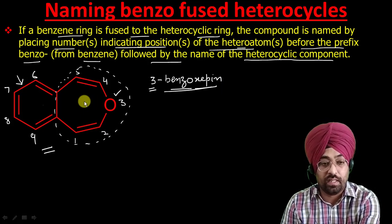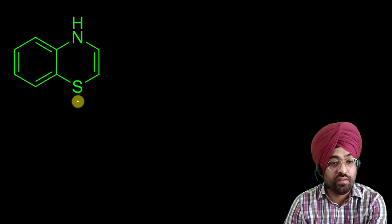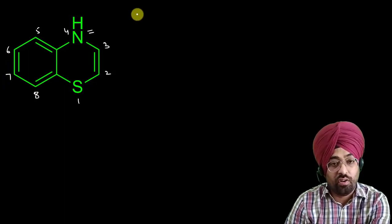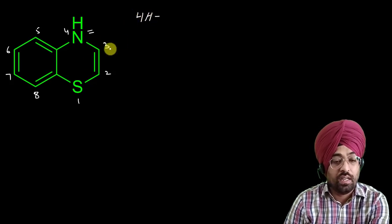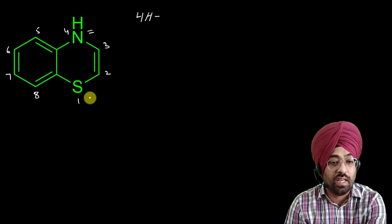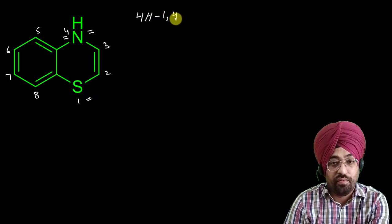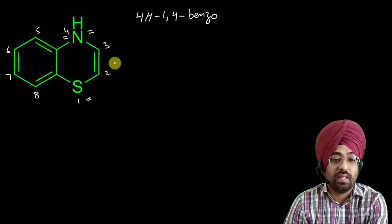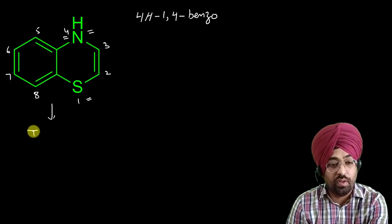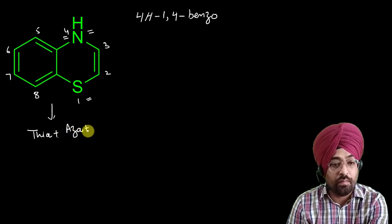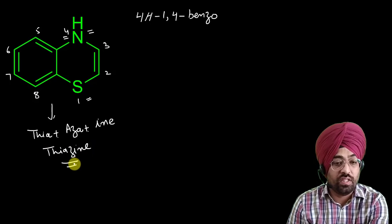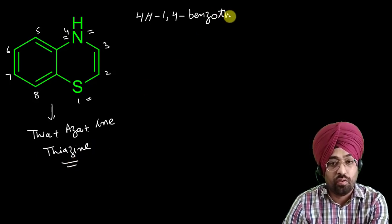Now let us do one more example. Here the numbering goes: one, two, three, four, five, six, seven, eight. This compound also contains a saturated center, so we first write the position of the saturated center — it is 4H. Then we follow the rules: specify the positions of the hetero atoms, which are at positions one and four, giving '1,4.' Then write the prefix 'benzo,' then the name of the heterocyclic compound. It is thia + aza + 'ine' for a six-membered ring, which gives thiazine. So the name is 4H-1,4-benzothiazine.